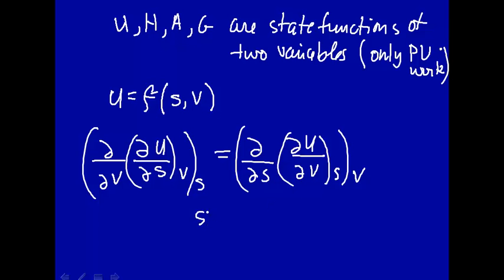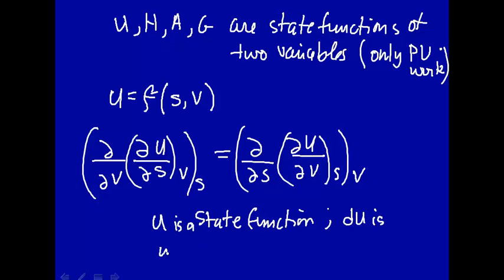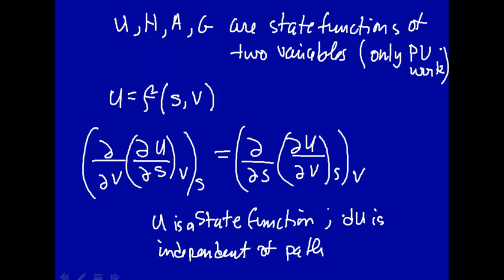The reason is that these are state functions. u is a state function, which means that du is independent of path. So if you want to get some place in three-dimensional space — where s and v are x and y, and u is z — it doesn't matter whether you travel along the s-axis and then up the v-axis, or up the v-axis and then along the s-axis. It's because state functions are independent of path. And that's what Maxwell realized — these are state functions, and therefore we can switch the order of differentiation.